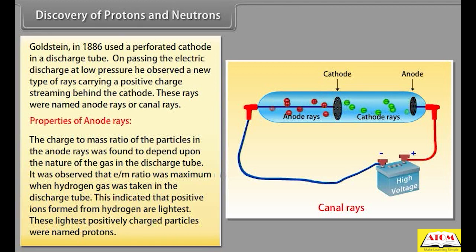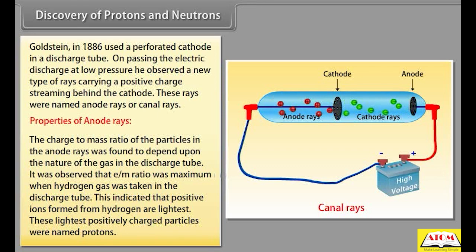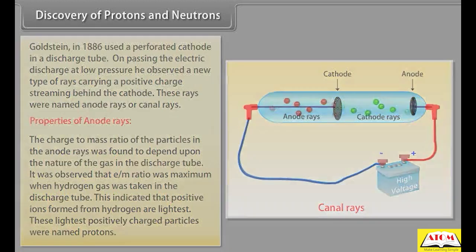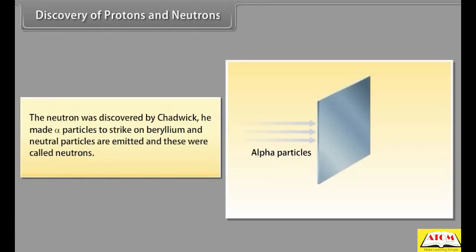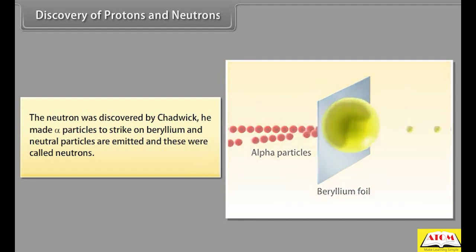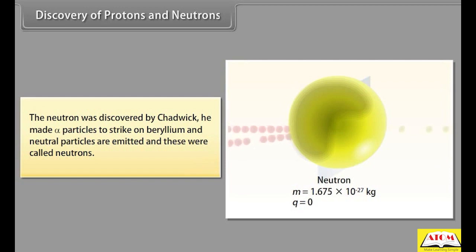It was observed that the e/m ratio was maximum when hydrogen gas was used, indicating that the positive ions formed from hydrogen are the lightest. These lightest positively charged particles were named protons. The neutron was discovered by Chadwick — he made alpha particles strike beryllium, and neutral particles were emitted, which were called neutrons.